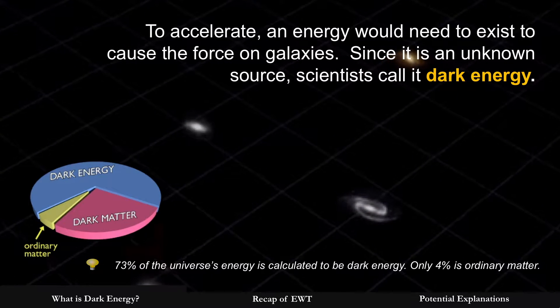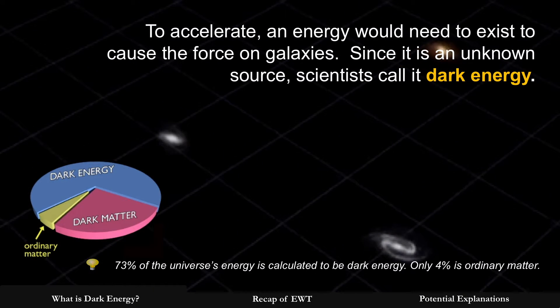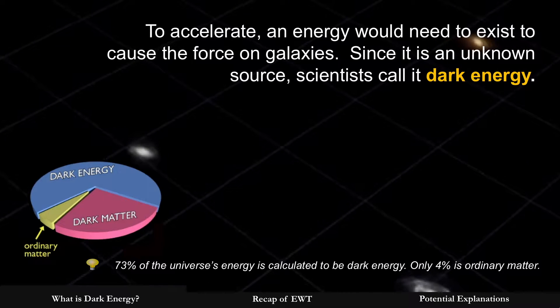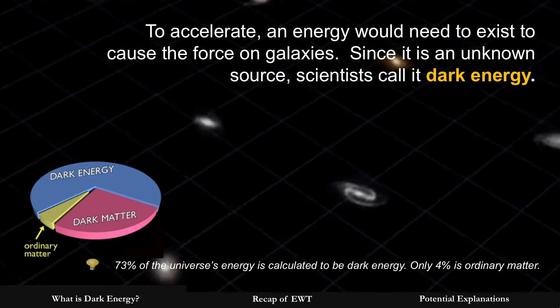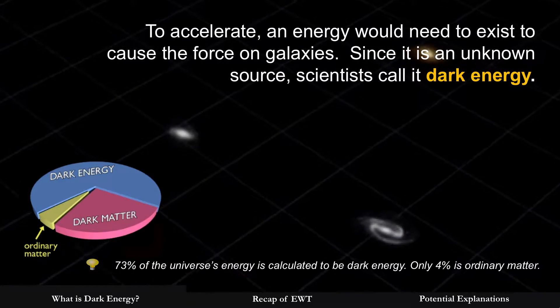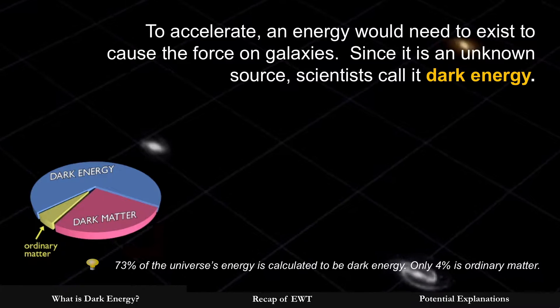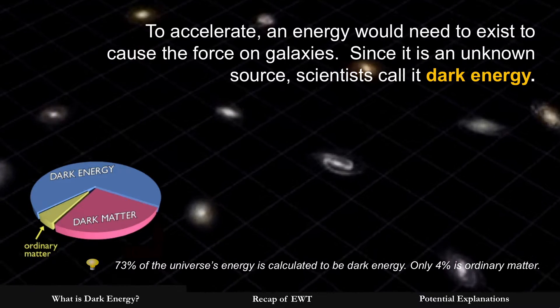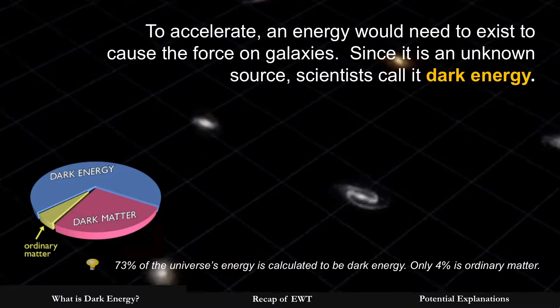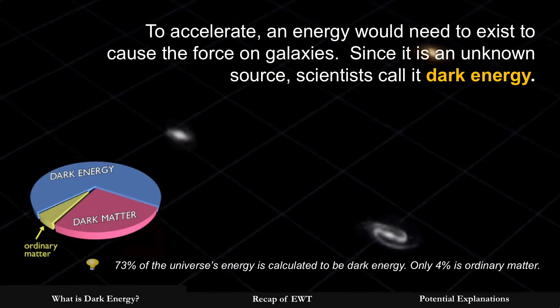Dark energy consists of about 73% of the universe's energy. To compare that to matter that we can see, ordinary matter - which is the stars and the galaxies with visible light - that's only 4% of the energy. So there's a lot more energy that is dark and is unknown.